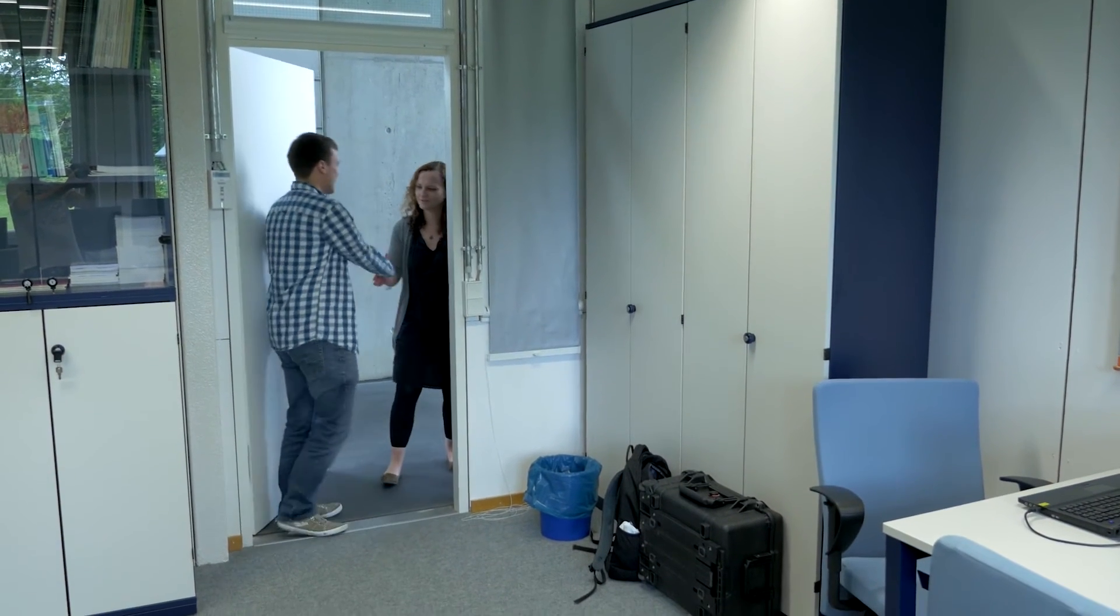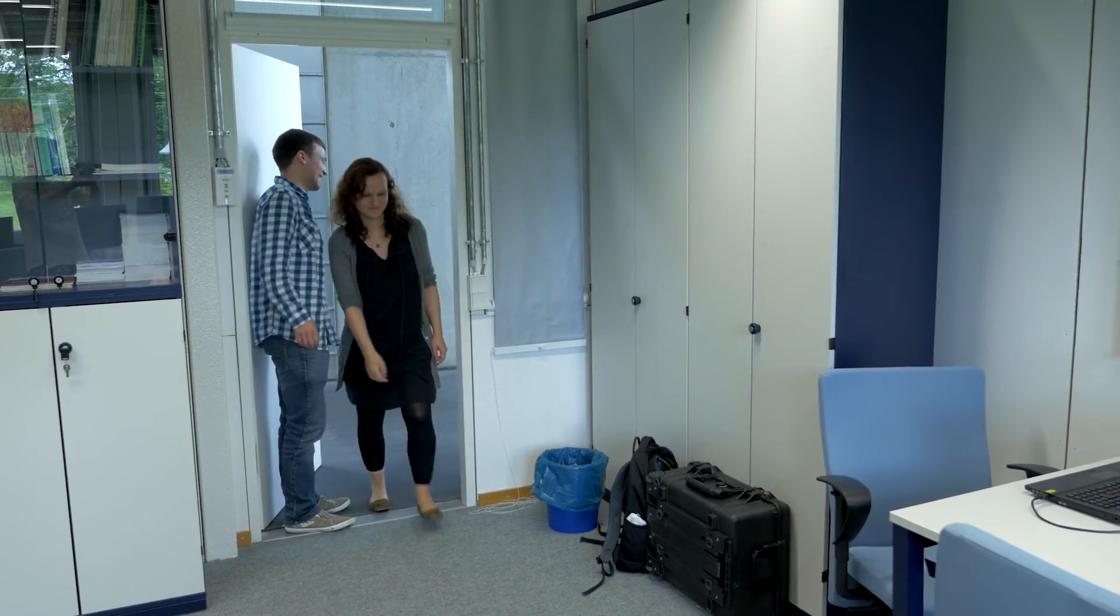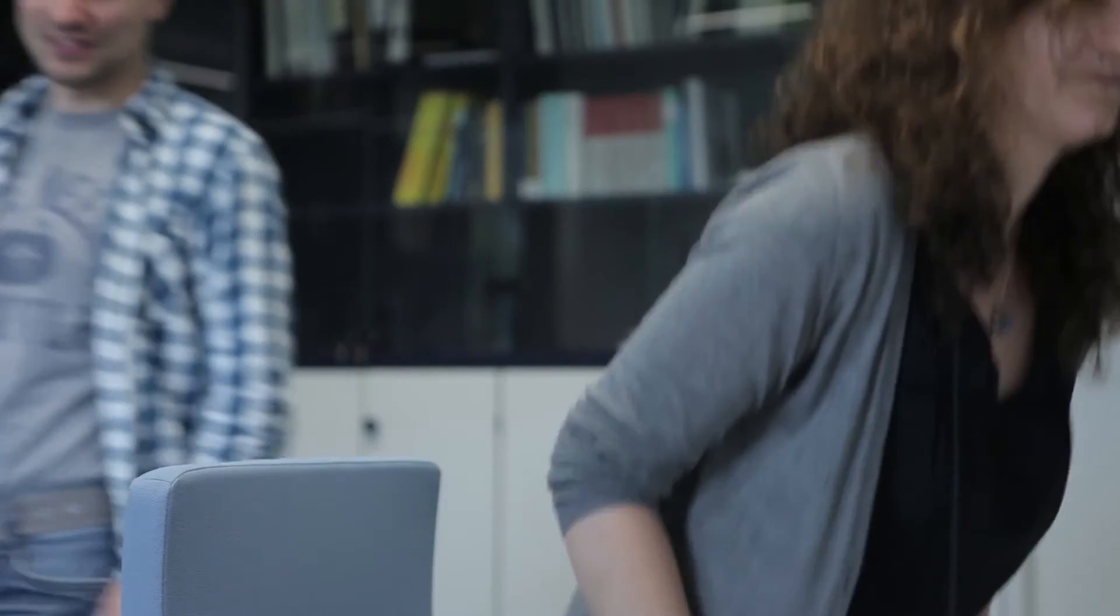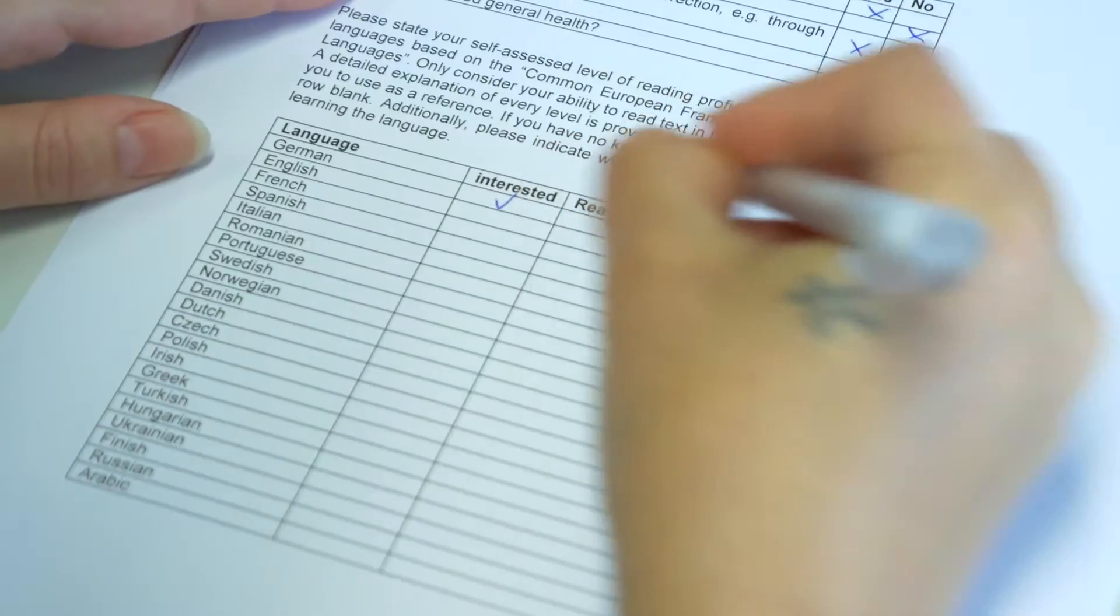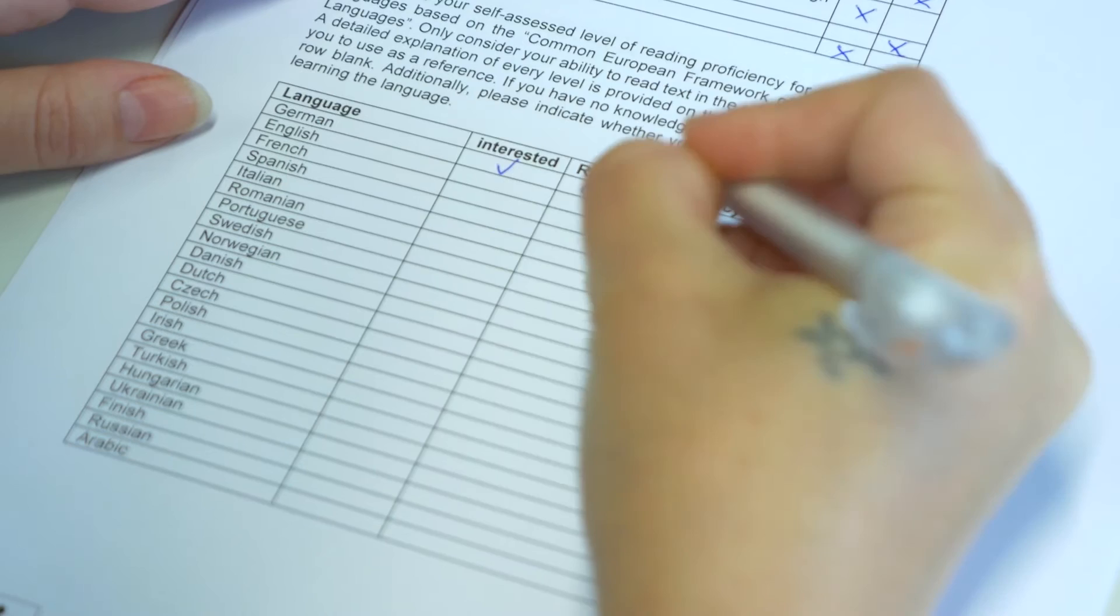We plan an eye tracking study with about 20 participants and in the study we look at text as a form of visualization. So we show each participant text in different languages and this text is encoded in simple questions, for example what is the capital of Germany, and we will show these questions in different languages, so for example in German, Spanish, Greek, and some of the languages are not familiar to the participants.